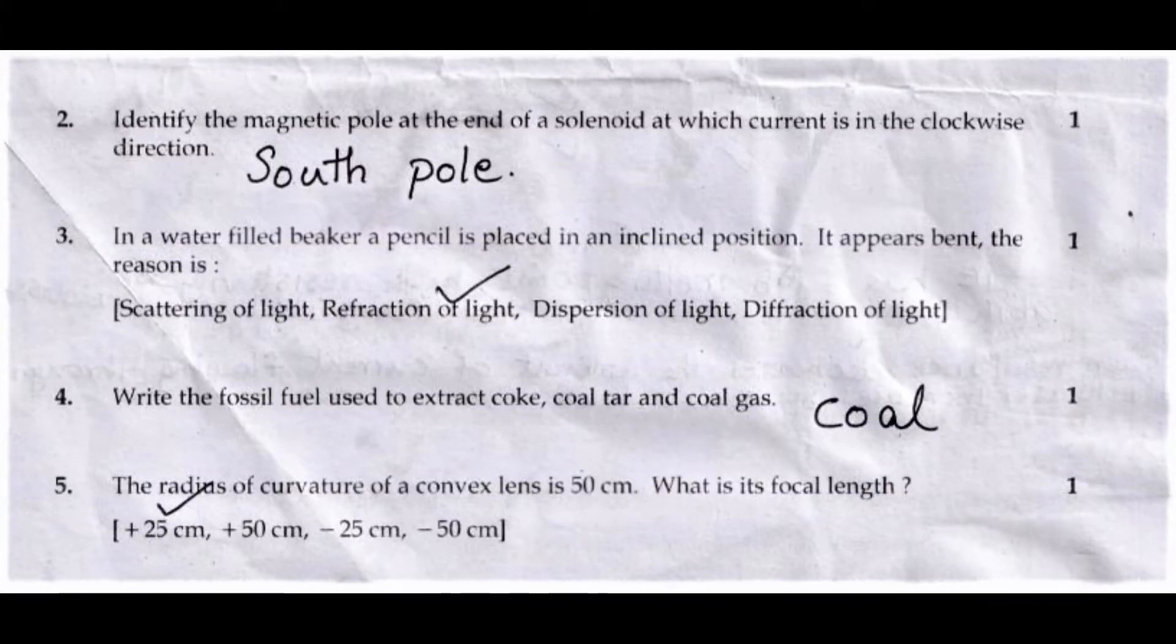Second question: Identify the magnetic pole at the end of a solenoid at which current is in the clockwise direction. Answer: South Pole.